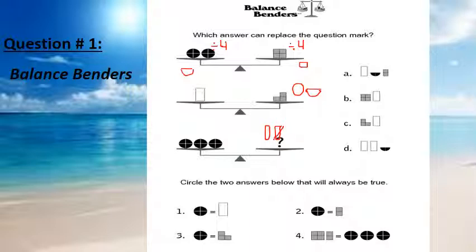We can cancel one of the rectangles and we can write half a circle with half a square. So which choice? Choice A. Or we can use C. So here we have two choices. Now, circle the two answers below that will always be true. Yes, Ali. Is a circle equal to a rectangle? No, because a rectangle is equal to one circle and a half. Is a circle equal to half a square? Yes. So choice two is correct. Is a circle equal to three quarters of a square? No. So each square and a half is equal to three circles. This is question number one.